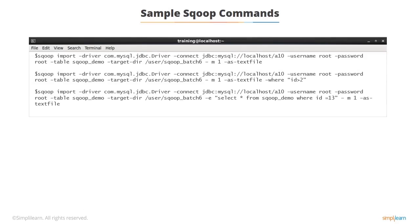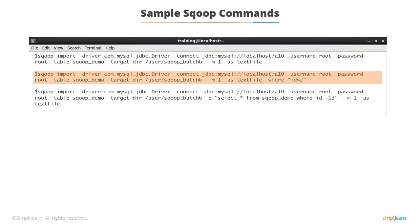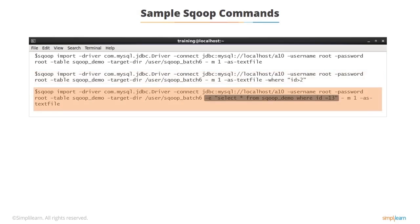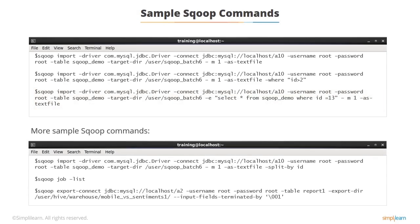Common Sqoop commands include: the first command imports data from the MySQL table 'sqoop_demo' to an HDFS directory. Note hyphen-m 1, which ensures there is only one mapper output. In the second command, note that 'id > 2' places a condition on data to be imported. You can also specify a specific SQL query as shown in the third command. The third command on the screen shows an export function. Please note the hyphens and double hyphens before driver, connect, username, and password.